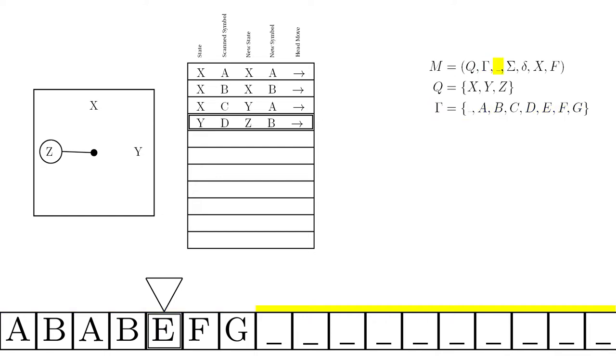The blank symbol, the default symbol for a cell on the tape, which is part of the alphabet. You need to specify the initial state. When you first start the Turing machine, what state is it in?